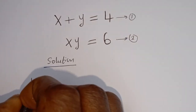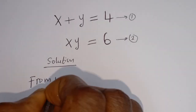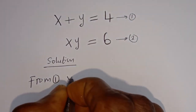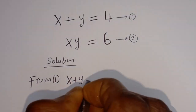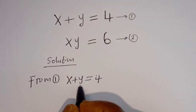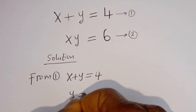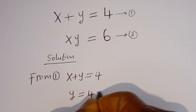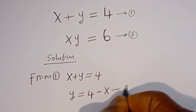From equation 1, x plus y is equal to 4. Now let's make y the subject of the formula: y is equal to 4 minus x. Let's call this equation 3.